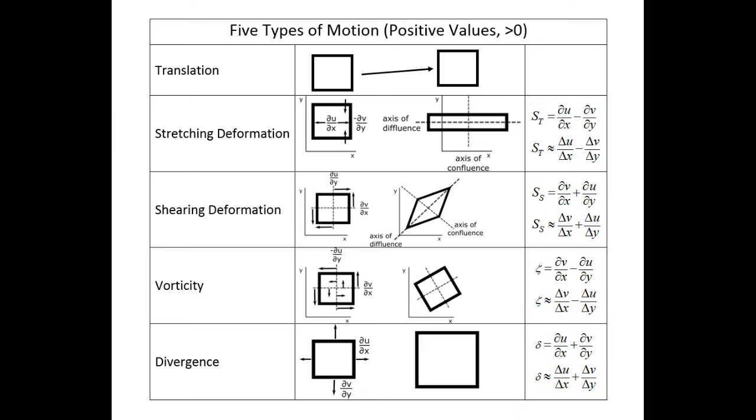The units for all of these motion types is per second, which is a frequency. In the figures I have shown only those transformations that are positive.